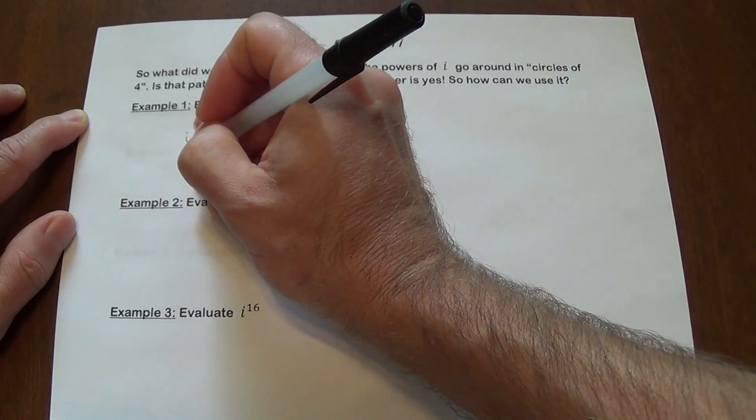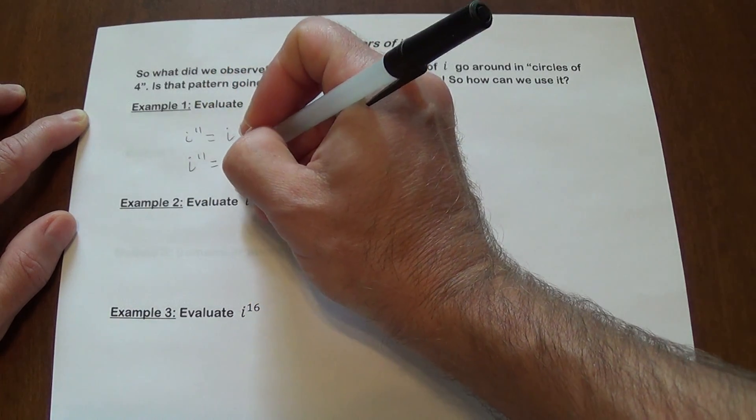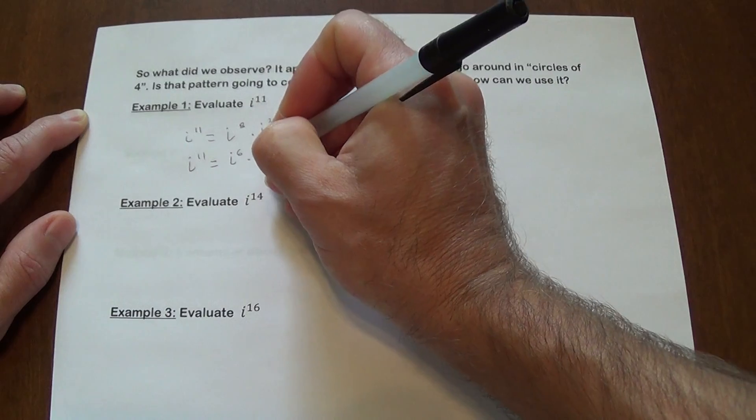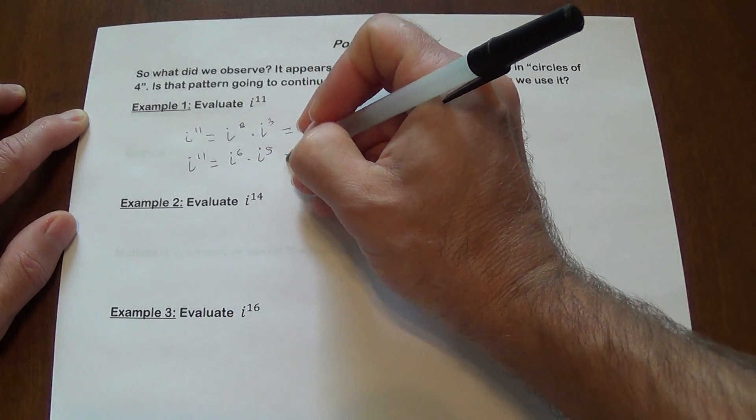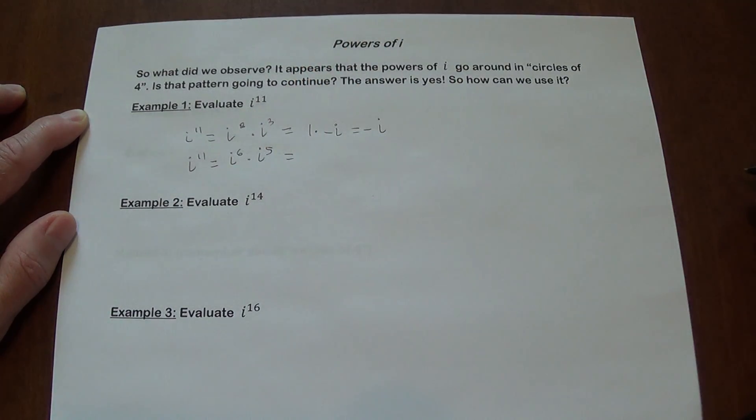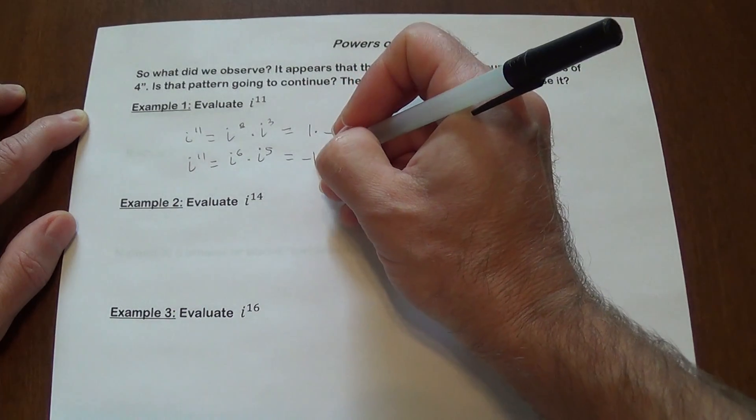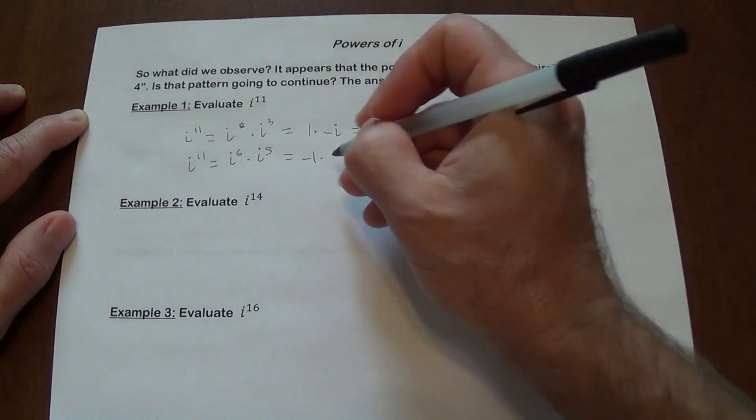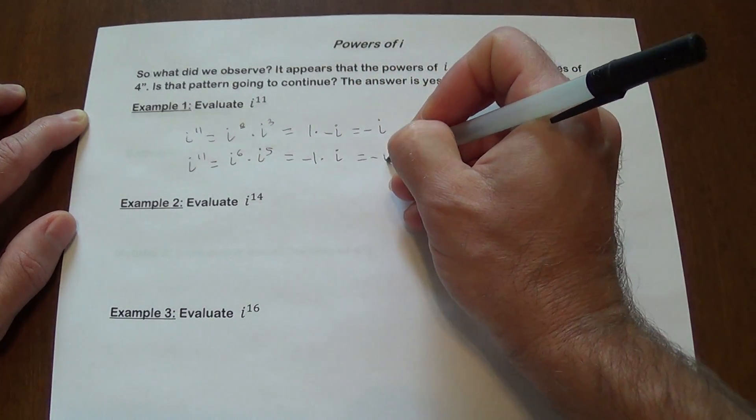I'm just going to give you one other possibility how you could have done that. You can use i to the sixth times i to the fifth. That also adds up to eleven. i to the sixth is negative one. i to the fifth is i. And you're still getting negative i.